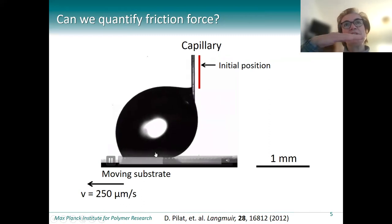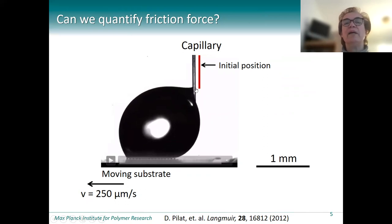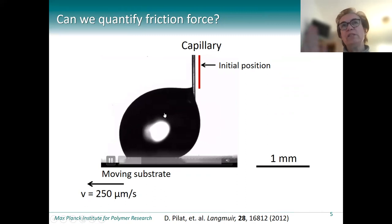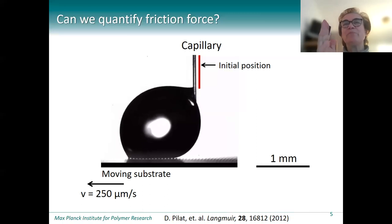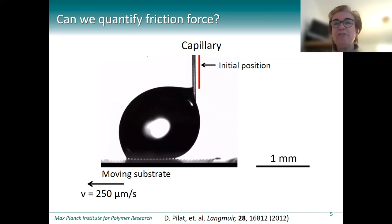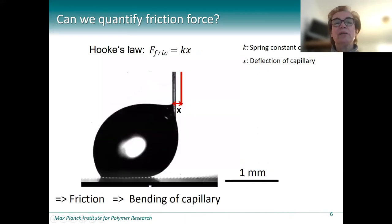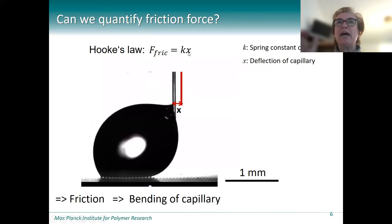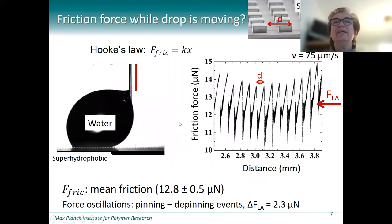Now we let the surface move, and the droplet is deformed but held by the capillary. You see that this force causes the bending of the capillary. Furthermore, because we moved the droplet over the micropillar array, you see these periodic variations in the position of the capillary. So how to get the force from this deformation? We can make use of Hooke's law. Hooke realized that the force to deform a capillary depends on the degree of deformation times the spring constant of the capillary.